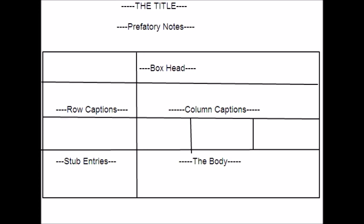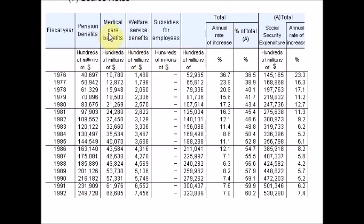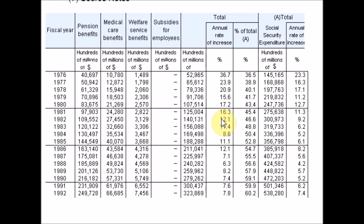This is the gist of the statistical table. Here is an example of a classical statistical table. You can see there will be a title, and these are the box heads — row captions and column captions. And this is the body. It gives all the information in numerical form.